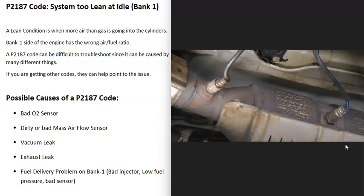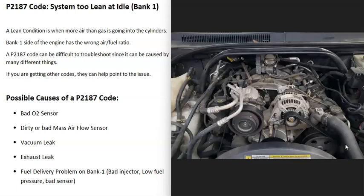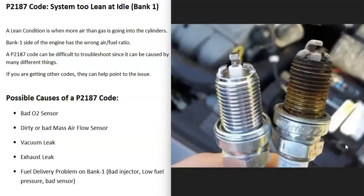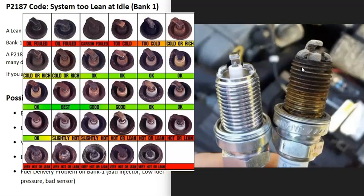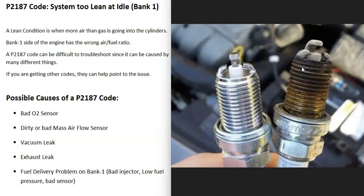A bad O2 sensor is one thing that could cause this code. Another approach is to take out the spark plugs on the bank one side and check how they're burning — you can tell if they're burning rich, lean, or correctly by looking at the tip. You can look up spark plug burn charts online to match them up. If one cylinder is burning too lean, focus on that cylinder and check if the injector is working correctly. If the whole bank is running lean, that would point to something like low fuel pressure.